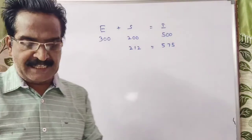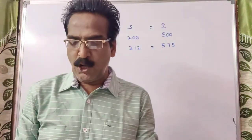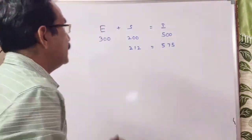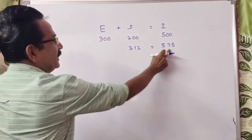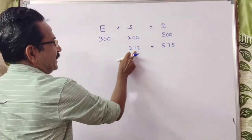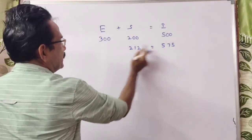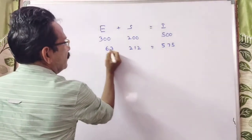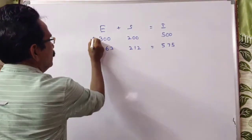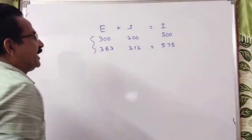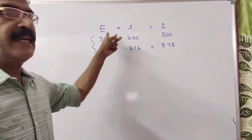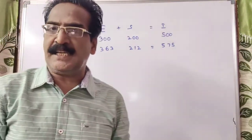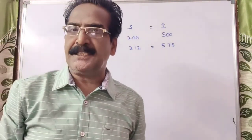The question is: by how much percentage should the expenditure increase? Income minus savings equals expenditure. So 575 minus 212 equals 363. The earlier expenditure was 300 and the present expenditure is 363.